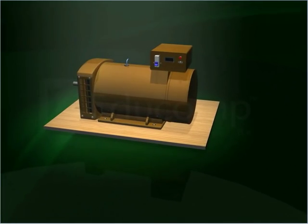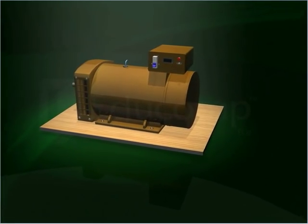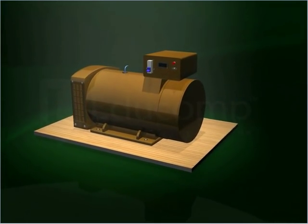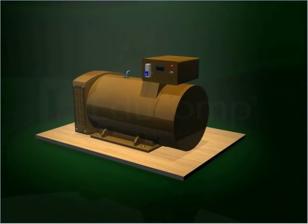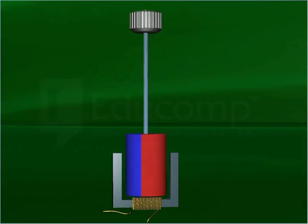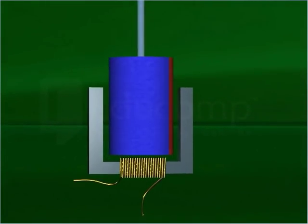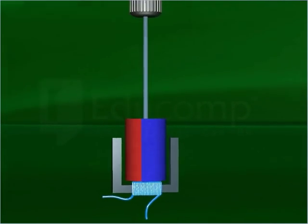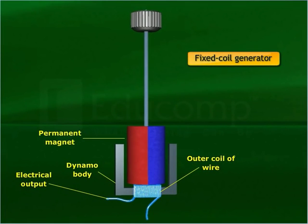The design of a simple AC generator used in the laboratory varies from that used in practice. This practical design uses a fixed coil with a magnet rotating around it — that is why it is called a fixed coil generator. In this case, the rotating magnetic field cuts the coil to produce an induced EMF.